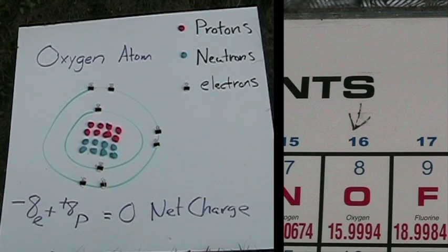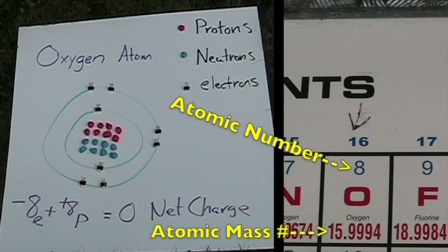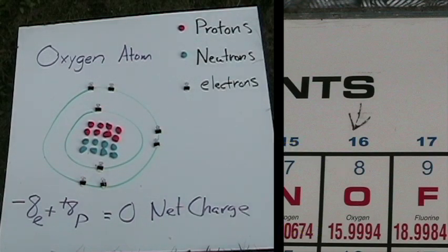All right, this is the oxygen atom, and it has eight protons, eight neutrons, and eight electrons. The number of protons and electrons is the same. You can see our formula at the bottom: negative eight E plus positive eight P equals a zero net charge.